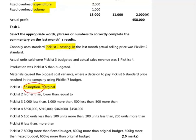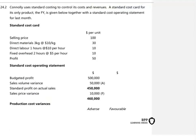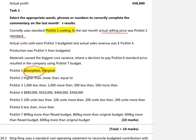Next, we have to compare the actual selling price to the standard. I'm going to look at the sales price variance to tell me the difference. We can see the sales price variance is $10,000 favourable. That means we've set our selling price higher than we had planned to, so we can select the appropriate option — this was higher than.